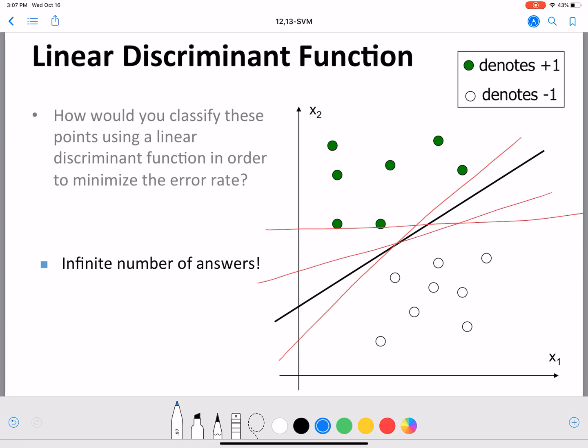For example, this black line seems to be away from both sets of points by a margin, by a good amount of distance. But what about this other line? This red line is very close to the green points. So just by visually examining these lines, we can say that the black line is probably better than others. There may be other lines that are as good as the black line,